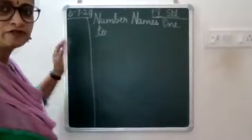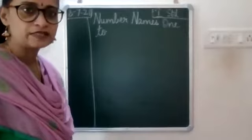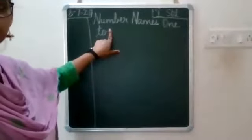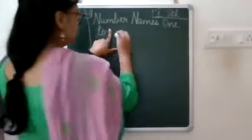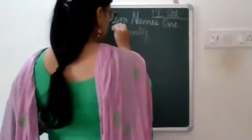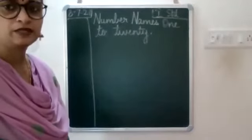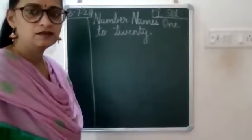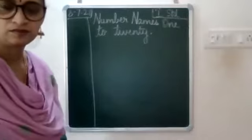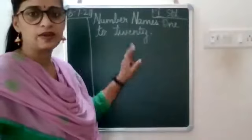All of you have written — if you have written, just show a thumbs up, please do not unmute yourself. After you finish writing TWO, leave one finger space, write T-W-E-N-T-Y, 20, and then put a full stop. You're going to write number names from 1 to 20.